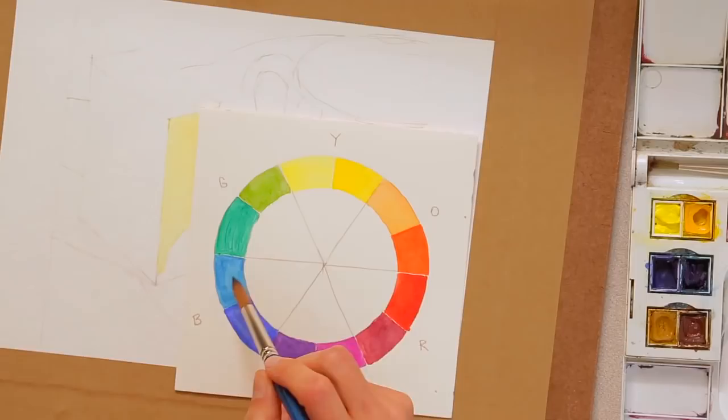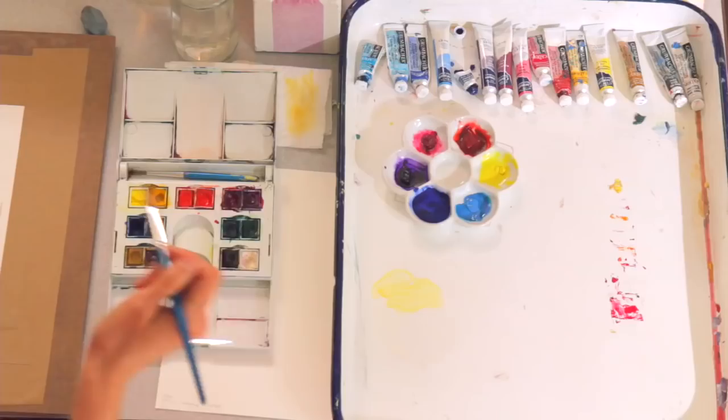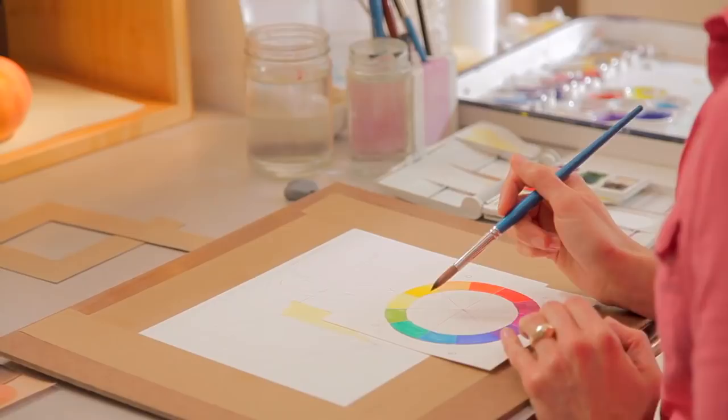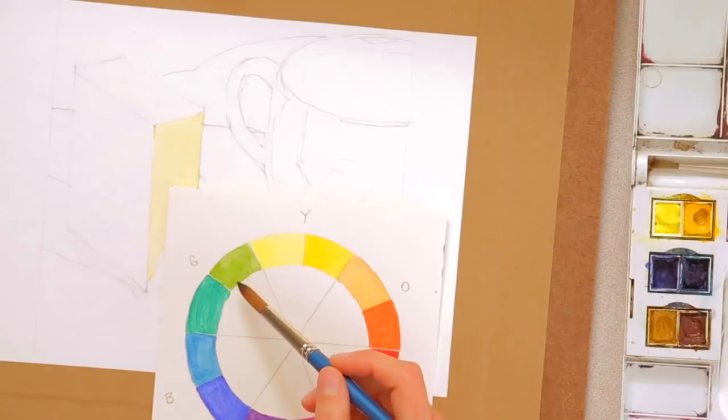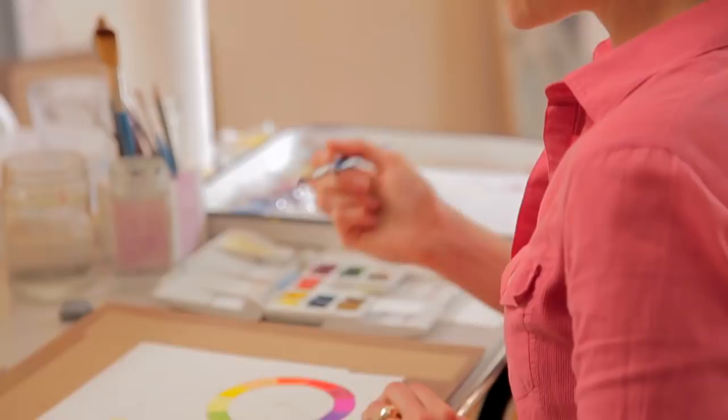So you might be asking why are you mixing a green if you have two greens in your set? Well, the greens that you have in your set are viridian and sap green, and neither one of those is a really bright yellow green. So if you're wanting a green that's a really bright yellow green, then again you would want to mix your lemon yellow with just a little bit of phthalo blue.